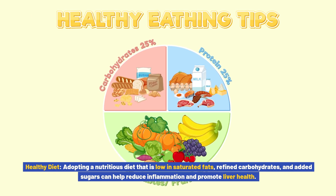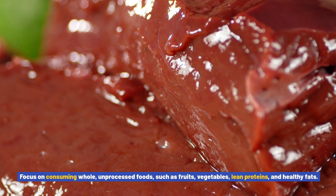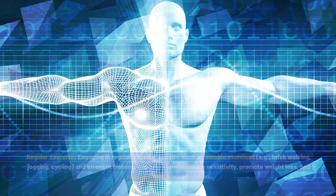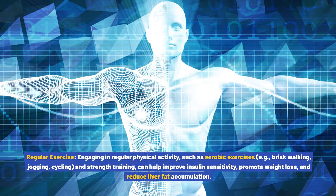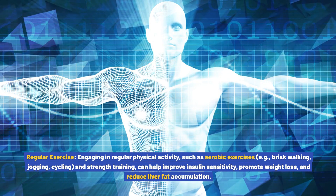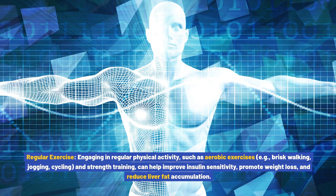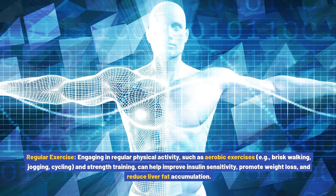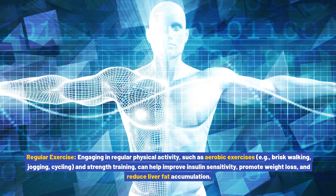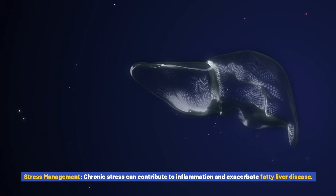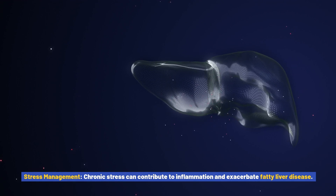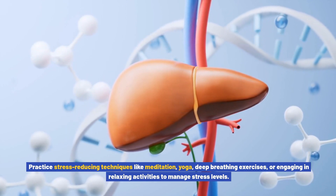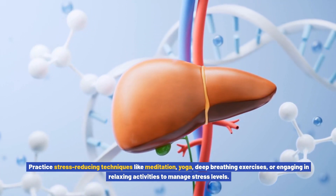Adopting a nutritious diet that is low in saturated fats, refined carbohydrates, and added sugars can help reduce inflammation and promote liver health. Focus on consuming whole, unprocessed foods such as fruits, vegetables, lean protein, and healthy fats. Regular physical activity — including aerobic exercises like brisk walking, jogging, and cycling, as well as strength training — can help improve insulin sensitivity, promote weight loss, and reduce liver fat accumulation.